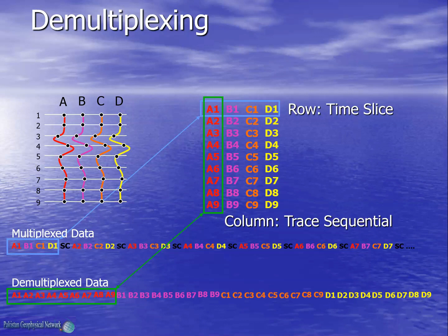It may be noted that multiplexing was part of initial classic seismic recorders. Analog to digital converters and memory were very costly, so a single analog to digital converter was incorporated in the recorder and a multiplexer switch was used to connect each channel to it. Modern seismic recorders have analog to digital converters for each seismic channel, and therefore no multiplexing is required — data is directly stored in trace sequential form.